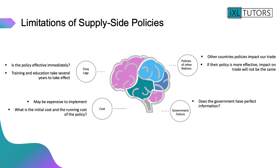Finally, there's a micro link here to government failure. Does the government have perfect information about this policy? Is it 100% going to be effective, or is there something they don't know? Do they not know the true costs or the true time it will take to implement the project? Are the government allocating resources efficiently? That will start you thinking synoptically about theme three as well, when you look into efficiency.